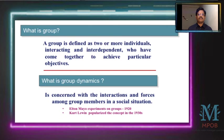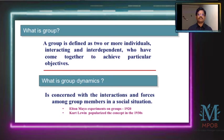Let us first understand what is a group. A group is defined as two or more individuals interacting and interdependent, who have come together to achieve a particular objective. A group requires a minimum of two people working together, interacting and interdependent, because they are working for the same reason or cause — to achieve a common goal.